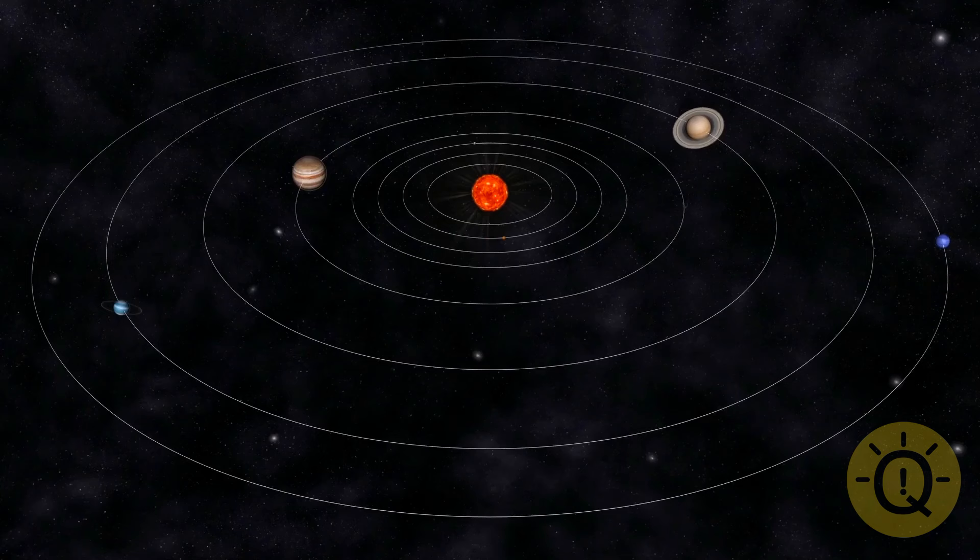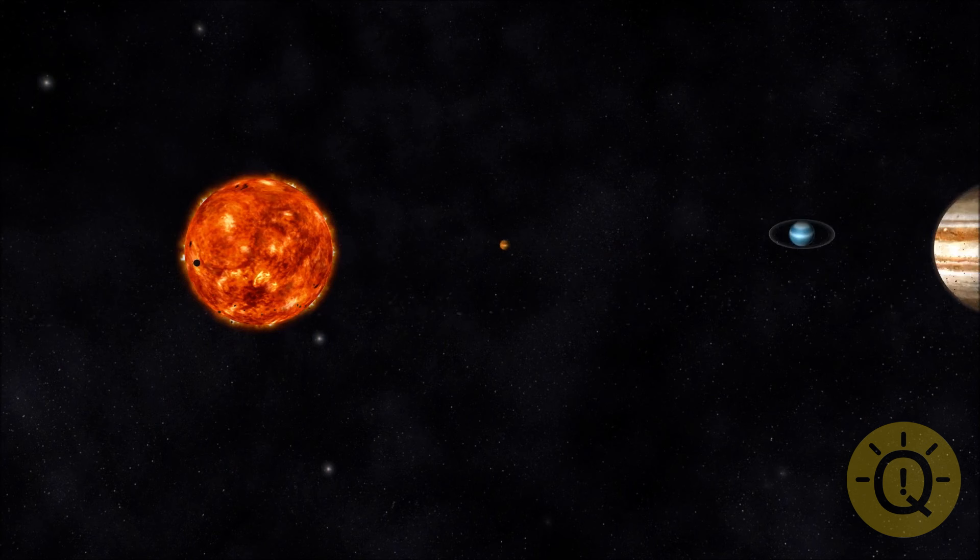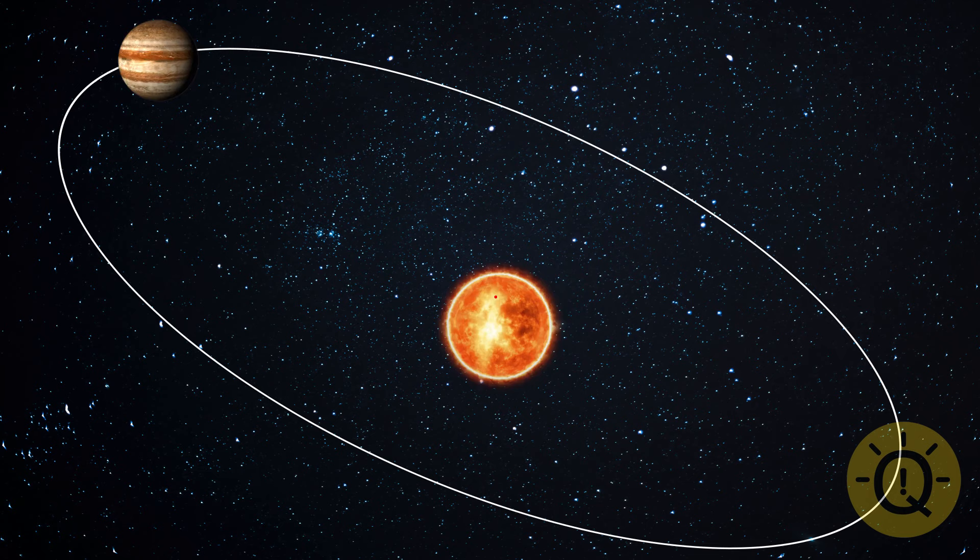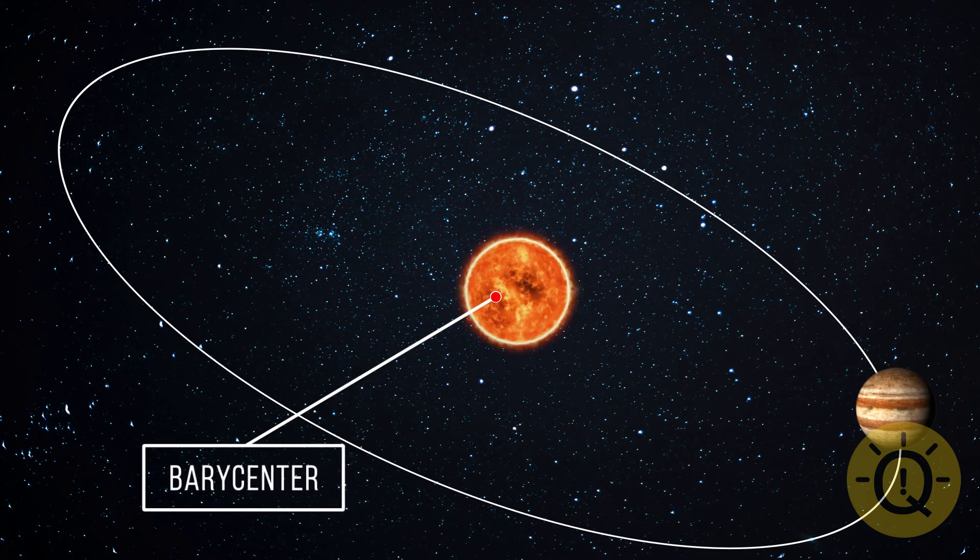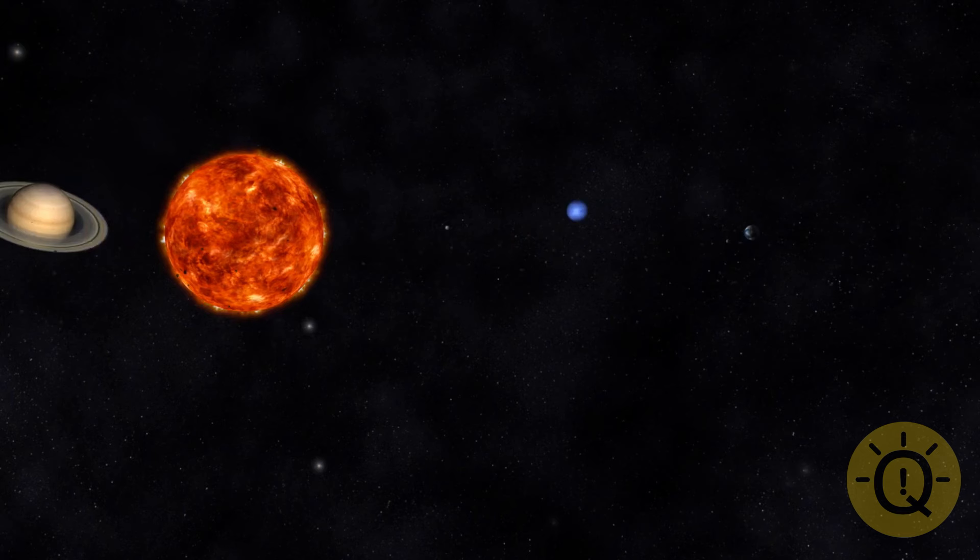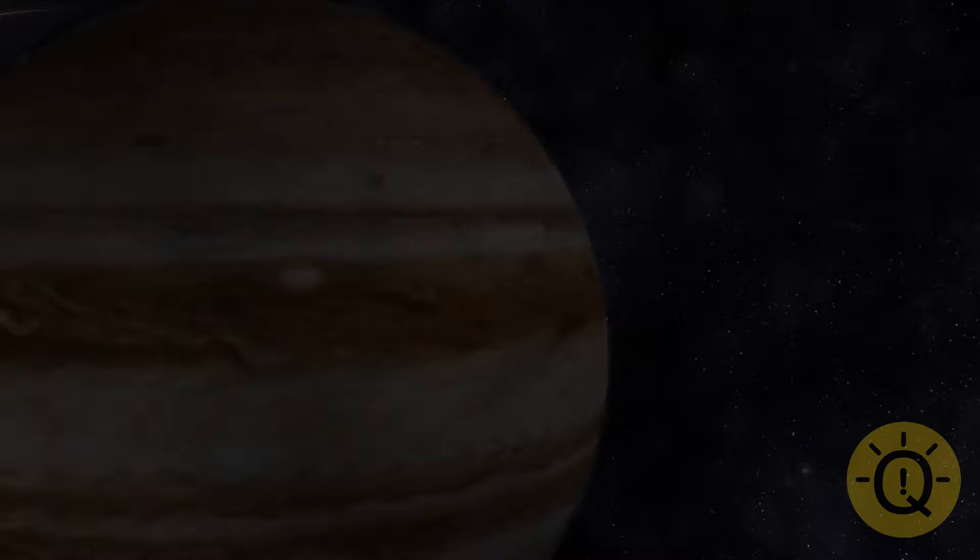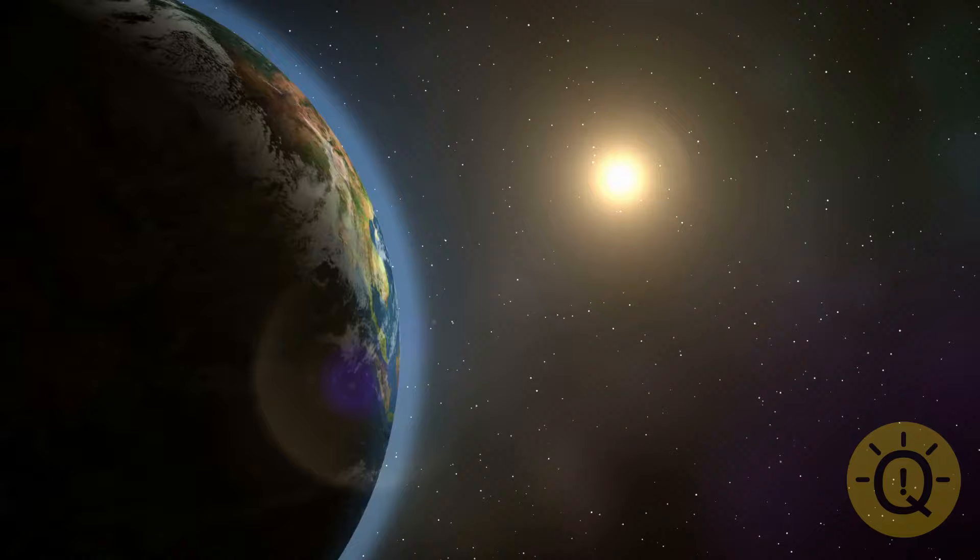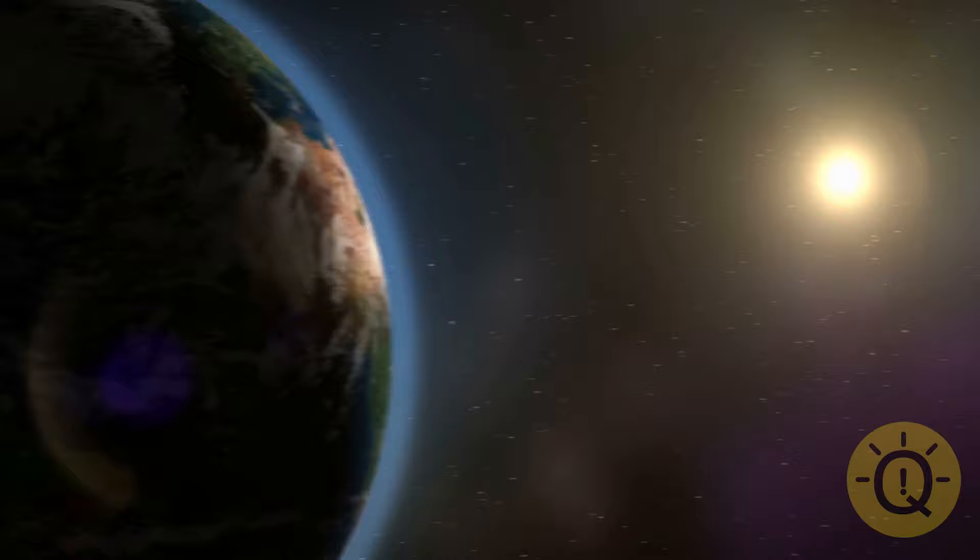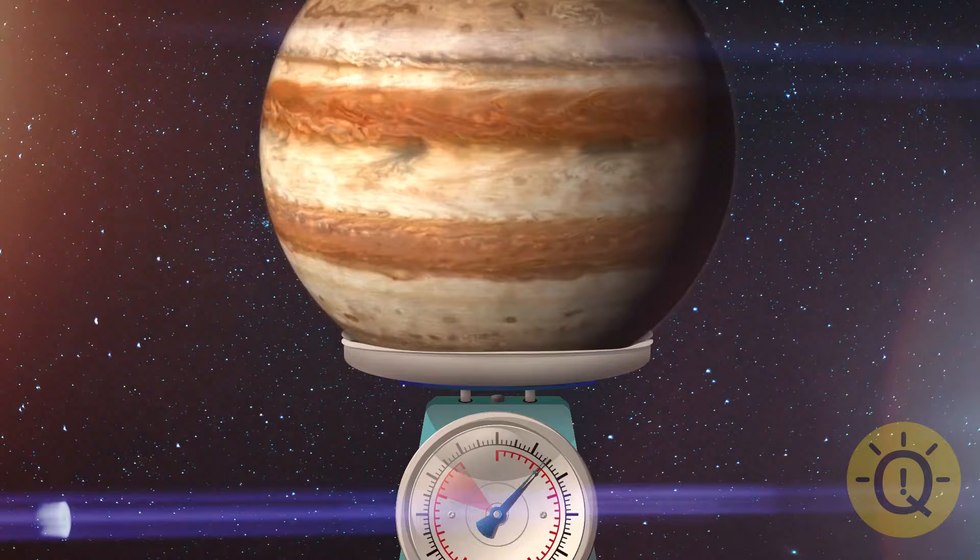Moving on. Jupiter doesn't technically orbit the Sun. When a smaller and less massive space object circles a bigger one, it doesn't travel in a perfect circle. Instead, both of these objects follow their respective elliptical orbits around a barycenter, which is their common center of gravity. Earth is way smaller than the Sun. That's why the barycenter it shares with our star is really close to the center of the Sun. That's why we can't see that our planet's orbit is a little bit off-kilter.